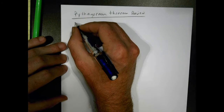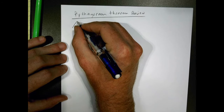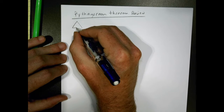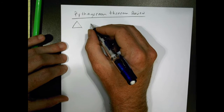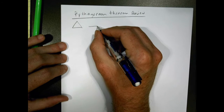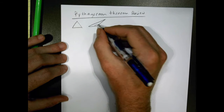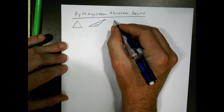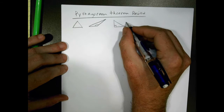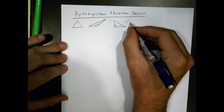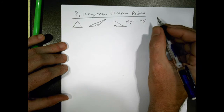Let's recall first of all that there are different types of triangles. We have acute triangles where all the angles are less than 90 degrees. We also have obtuse triangles where you have one angle that's larger than 90 degrees, and then we have special triangles known as right triangles. With a right triangle, one of the angles is equal to 90 degrees.